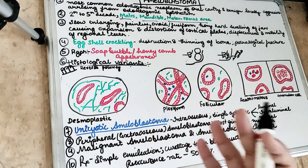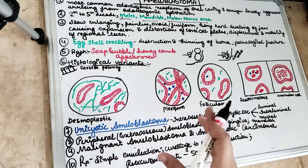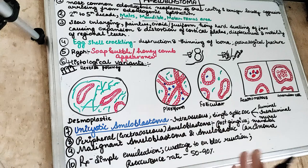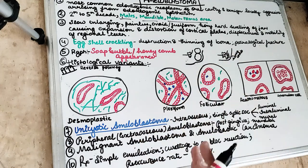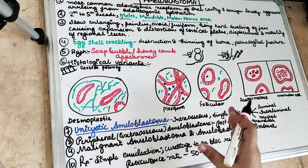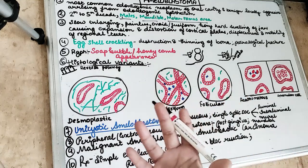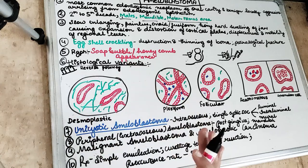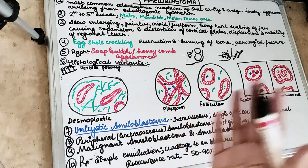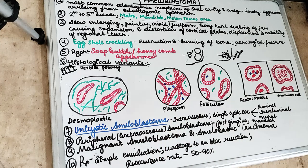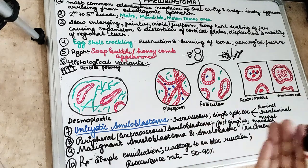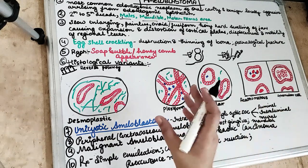Racially, black people are more affected with ameloblastoma compared to others. It is a slow-growing, painless, bony hard swelling causing facial asymmetry due to the large swelling. The lesion can displace teeth, cause pain, paresthesia, and tooth mobility. The lesion is locally invasive, with infiltration of intramedullary spaces causing erosion of the cortical bone.